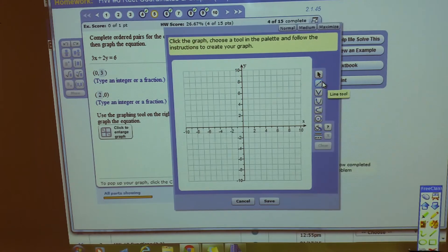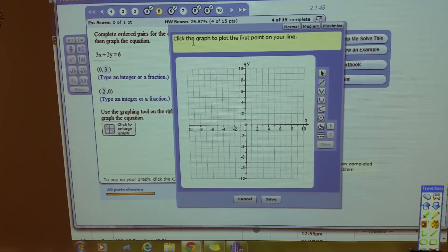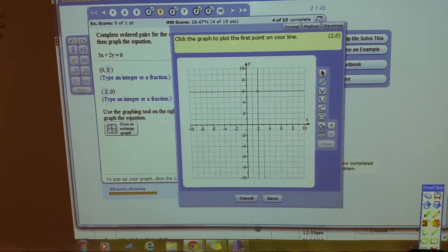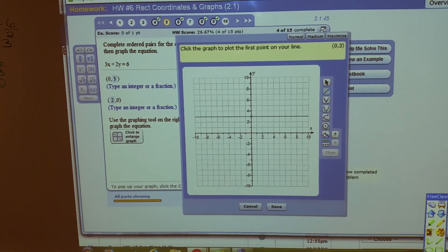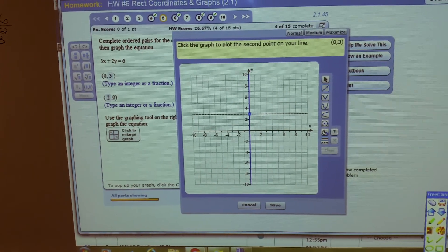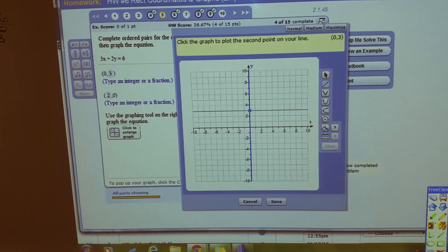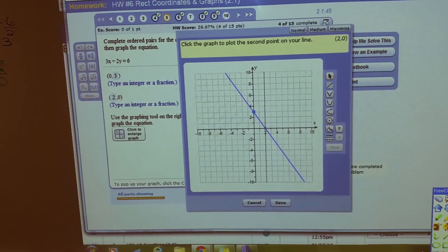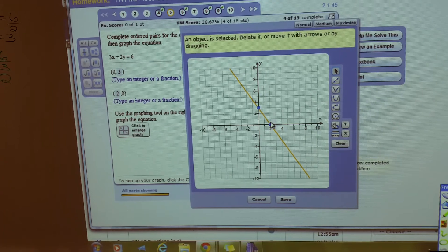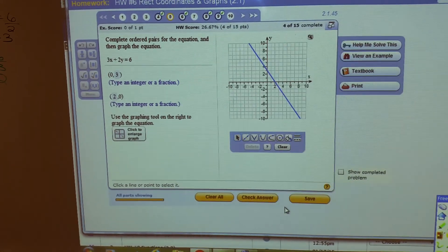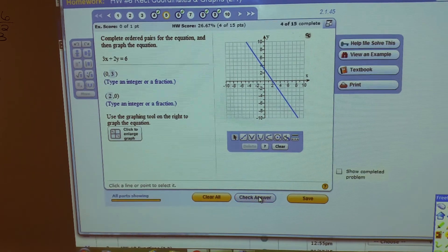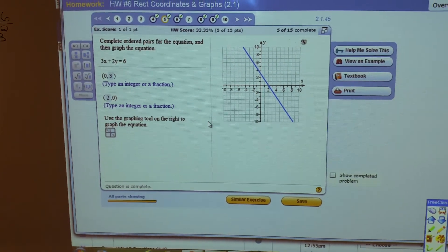This is a line tool and this talks you through. Click one of the points. Over zero, up three. Right there. Now plot the second point. Right two, up zero. Save it. Check it.